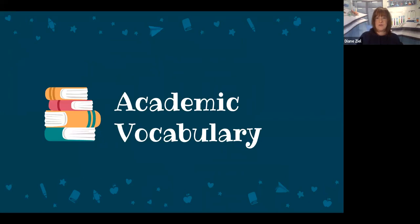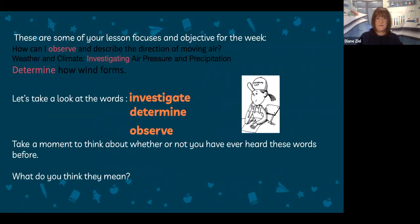Let's look at some new academic vocabulary for the week. These are some of your lesson focuses and objectives you might see this week: how can I observe and describe the direction of moving air, weather and climate investigating air pressure and precipitation, and determine how wind forms. You'll notice some words highlighted in red: the word observe, investigating, and determine. These are some great academic vocabulary words and we will dive into their meanings.